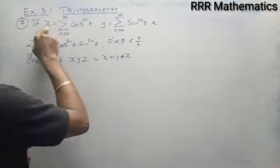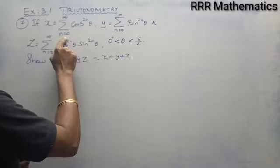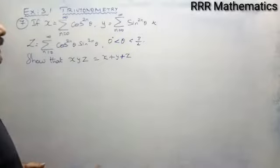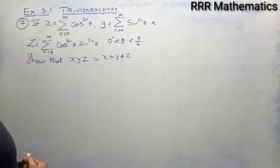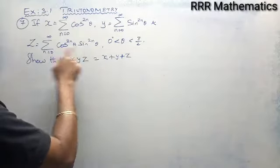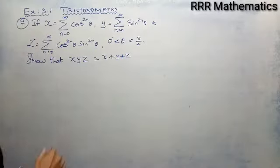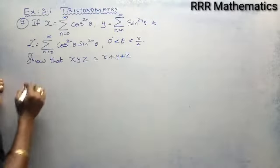I have x which is equal to sigma n=0 to infinity cos^(2n) theta, y is sigma n=0 to infinity sin^(2n) theta, and z is sigma n=0 to infinity cos^(2n) theta into sin^(2n) theta. I want to prove that x into y into z equals x plus y plus z.